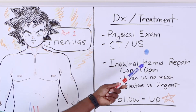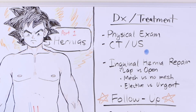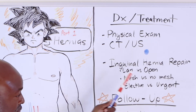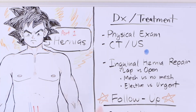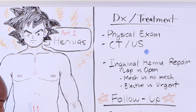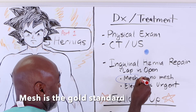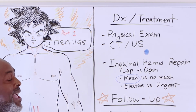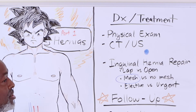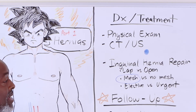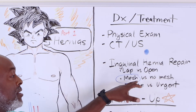Treatment options include laparoscopic versus open, mesh versus no mesh, and elective versus urgent. Elective hernia repair has a much better success rate; urgent repairs involve a lot of edema and are harder, but sometimes necessary. As for mesh: always use mesh unless there's an infection preventing it. For a femoral hernia repair, mesh is plus or minus — femoral hernias often present as incarcerated with potentially non-viable bowel. If the intestine is dead, no mesh; if it's viable, consider putting a piece of mesh in.